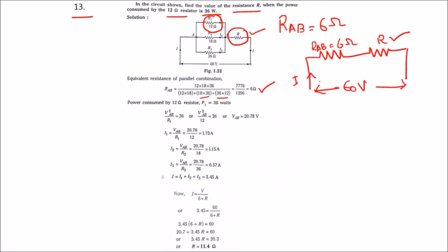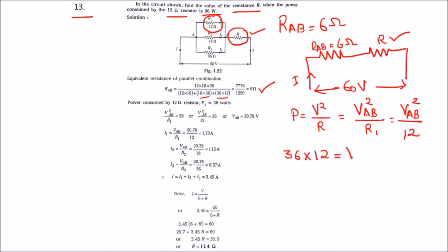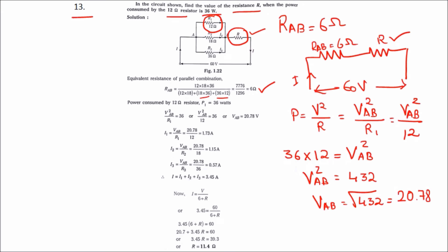They have given the power across R1 as 36 watts. Using the formula P = V² / R, for R1 resistance we have V_ab² / R1. That is V_ab² / 12 = 36, so V_ab² = 36 × 12 = 432. Therefore V_ab = √432 = 20.78 volts. We have now found the voltage across points A and B.